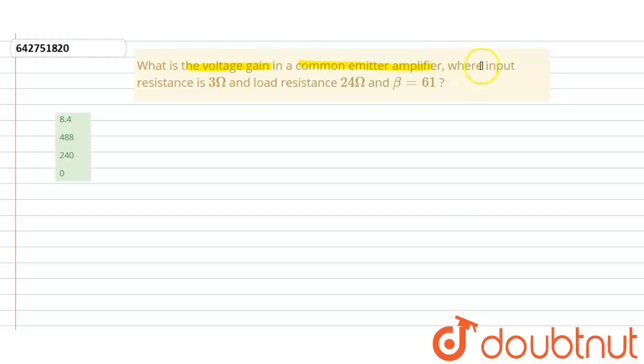Common emitter amplifier where input resistance is given as 3Ω and the load resistance is given as 24Ω and the beta is also given as 61.